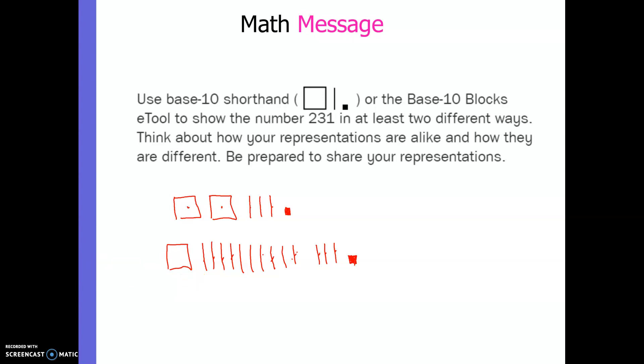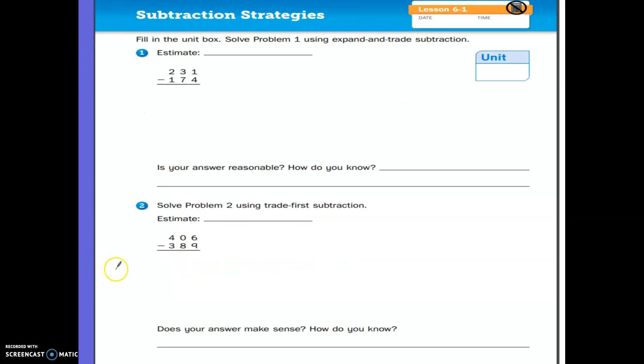Go ahead and erase the board and put it to the side, and I need you to get out your math journal and find page 189. I'm going to pause the video while you get there. On this page, we are going to talk about two different subtraction strategies. One we've done in previous units. One is a new one that we're going to be doing in the book, but it may not be new to you.